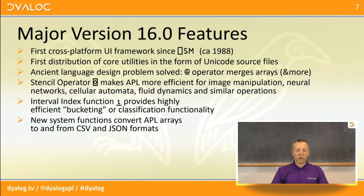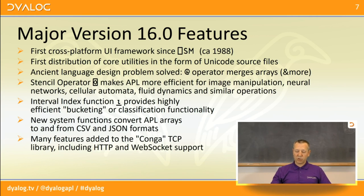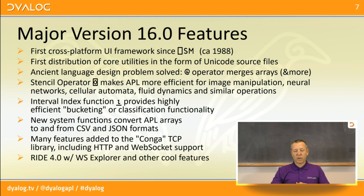On the interface side, there are new system functions to convert APL arrays to and from the popular CSV file format. Richard presented this in the first webinar — one question we got was why didn't you do that 20 years ago. JSON is a much more modern format and we haven't been quite as late in supporting that. The Conga TCP library is becoming more and more important as people start building lightweight applets and microservices, and it has a major new release. There's also the remote IDE, Ride, now becoming the standard interface on Linux.